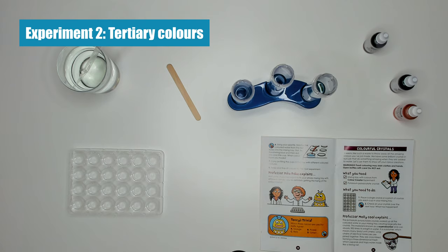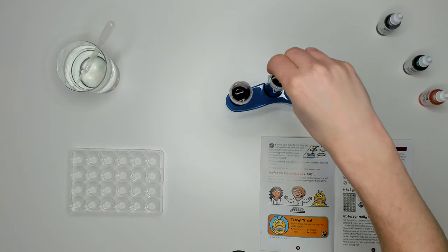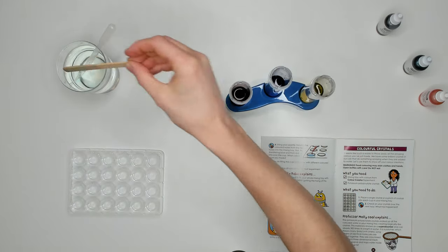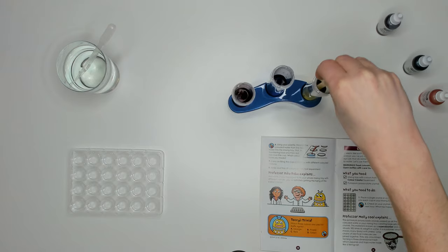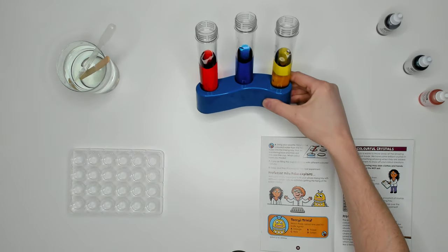In experiment two we're going to be making tertiary colors. We start with the same deal as before by half filling three test tubes with cold water and adding five drops of food color to each one to make a base set of primary colors: red, blue and yellow.